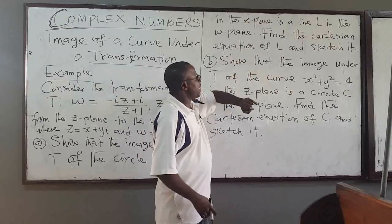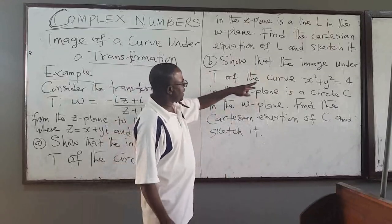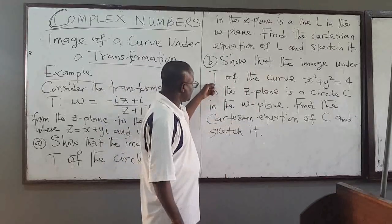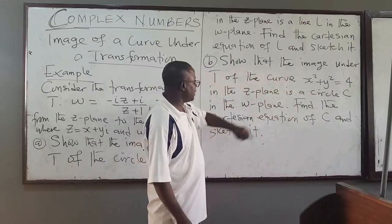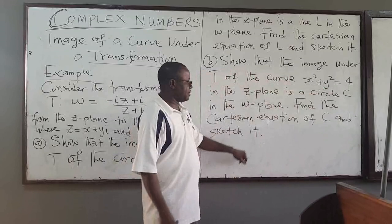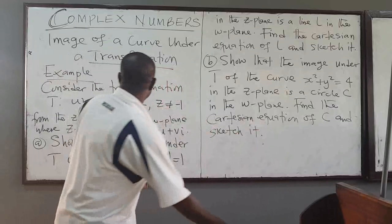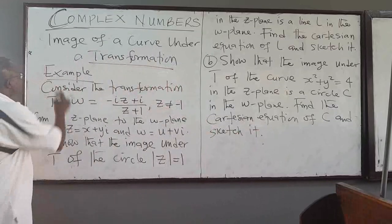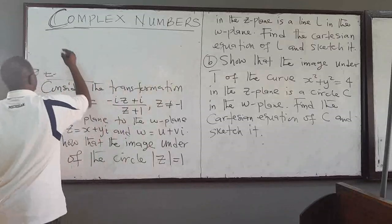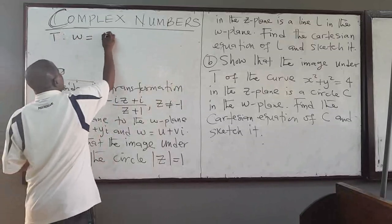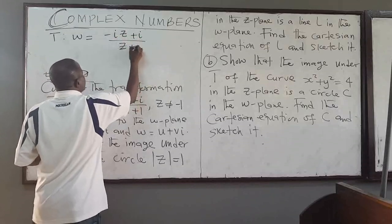Find the Cartesian equation of L and sketch it. The second part says we want to show that the image under T — using the same transformation — of the curve x² + y² = 4 in the Z plane is a circle C in the W plane. Find the Cartesian equation of C and sketch it. So we'll be using this transformation a lot. W is equal to minus i times (Z + i) all over (Z + 1).